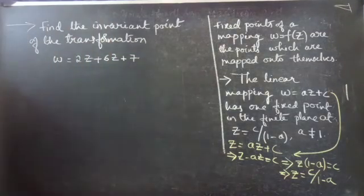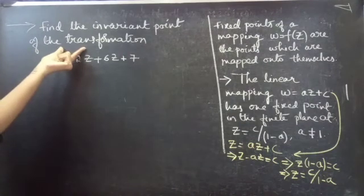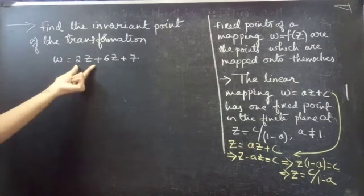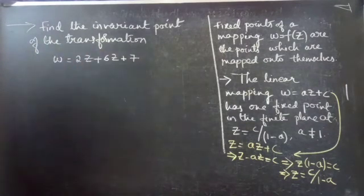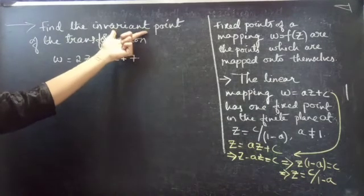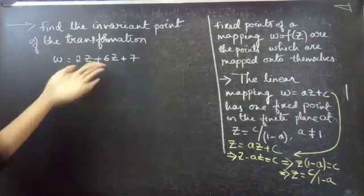Problem: Find the invariant point of the transformation W equals 2Z plus 6Z plus 7. Invariant point, or fixed point — we have to find the invariant point or fixed point of the given transformation.